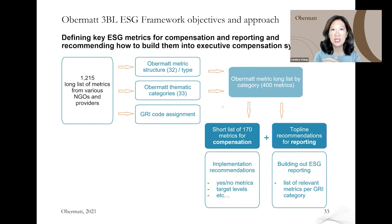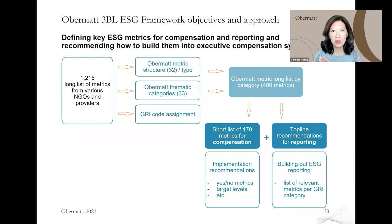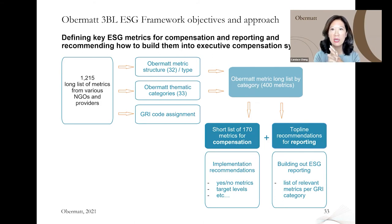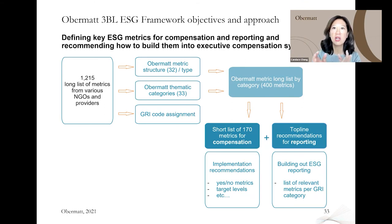For these 170 metrics, the intention is not that all 170 should be included in your reporting and your compensation. Obviously, depending on your company, your strategic priorities, and your ESG priorities, you will pull from this pool of 170 to select the ones most relevant for your company. We tried to narrow down to a short list to make it easier to navigate for compensation, but also for reporting.